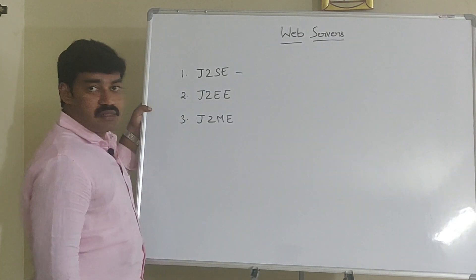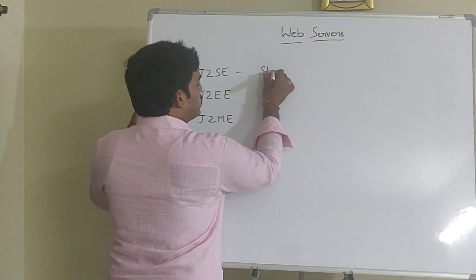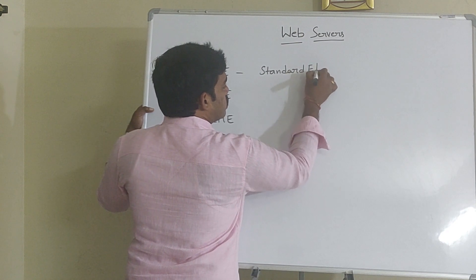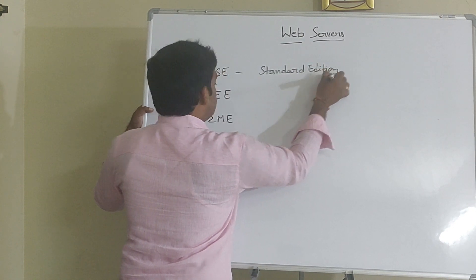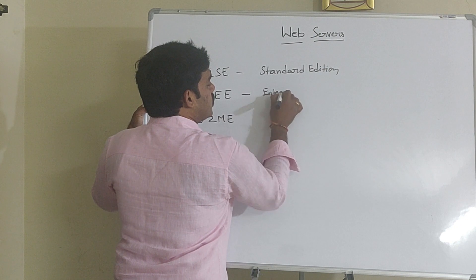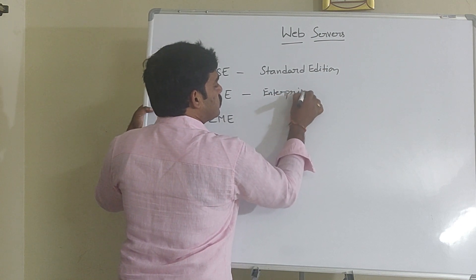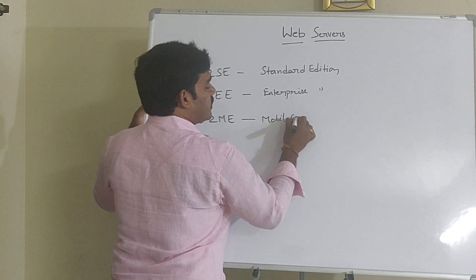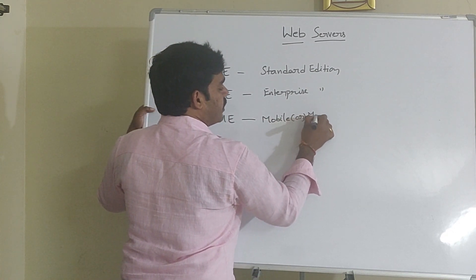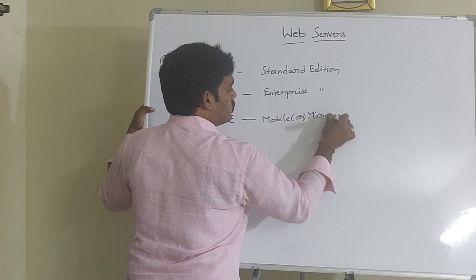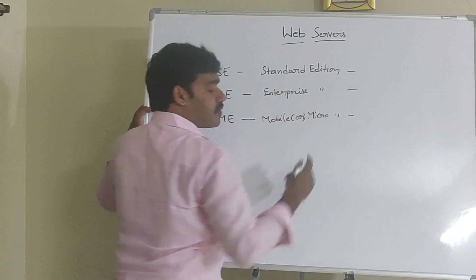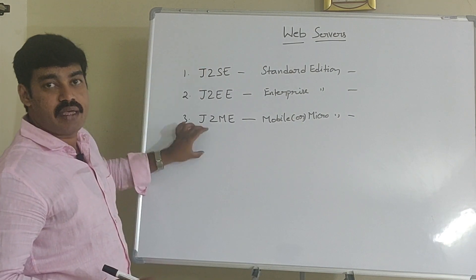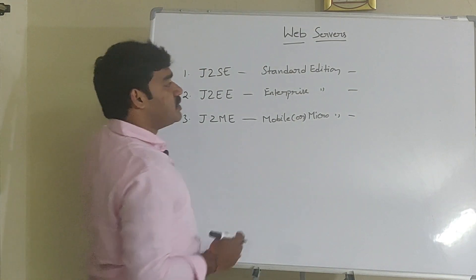J2SE means Java 2 Standard Edition. J2EE means Java 2 Enterprise Edition. J2ME means Mobile, or what we can say, Micro Edition. Sun Microsystems proposes these three modules of Java: J2SE, J2EE, and J2ME. What is J2SE?